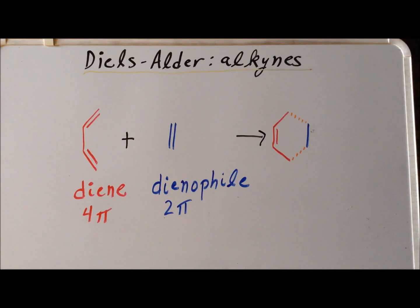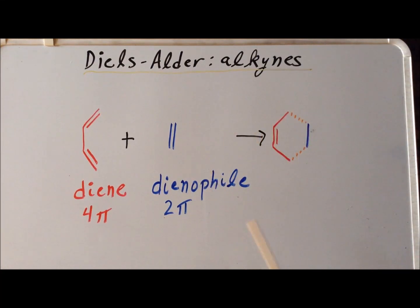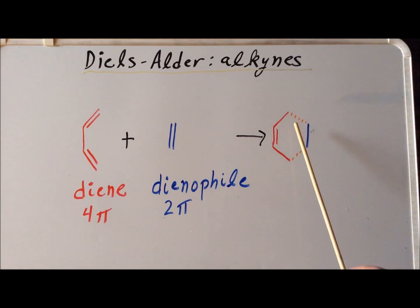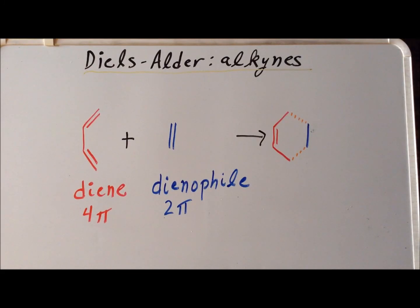For the specific case of the reaction of 1,3-butadiene with ethylene, our product is cyclohexene. Notice that we've color-coded the carbons in the product to show from whence they came in the reactants. Also notice that while we have three pi systems in the reactants, we have only a single pi system in the product — we've gone from three double bonds to one double bond. In the process, we formed two new sigma bonds, shown here as dotted orange lines to distinguish them from the bonds that previously existed in the reactants.